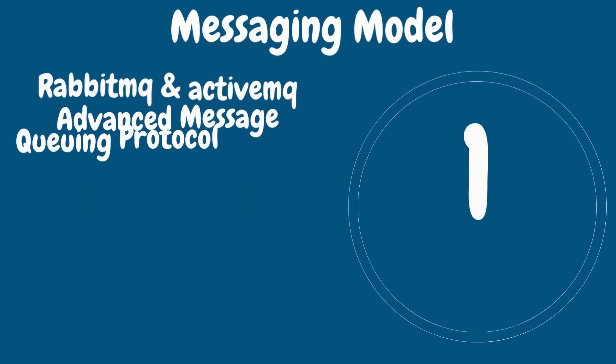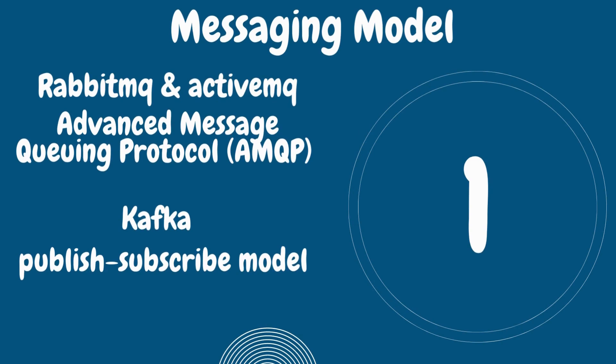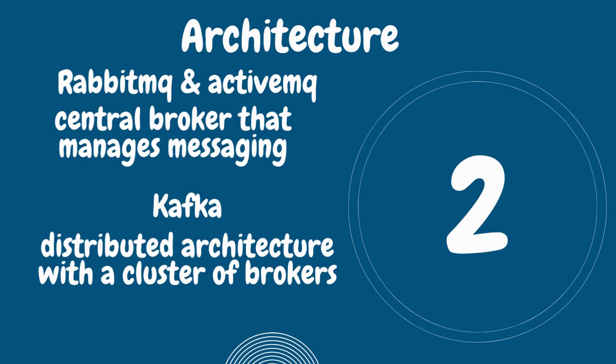The first core difference is the messaging model. RabbitMQ and ActiveMQ are based on AMQP and support traditional messaging patterns where messages are stored in a queue and processed in sequential order. Kafka, on the other hand, is based on the publish-subscribe model where messages are broadcast to all subscribers.